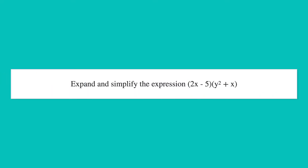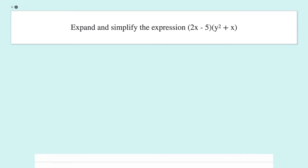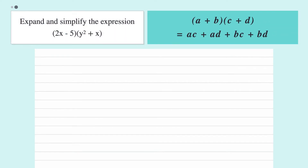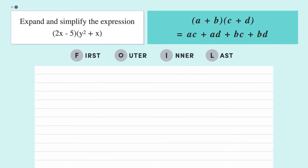Expand and simplify the expression (2x − 5)(y² + x). This expression is in the form (a + b)(c + d), so let's bring up the product rule. We know that this expression will simplify to ac + ad + bc + bd, where a, b, c and d are the terms in the given expression. We could identify what each variable is and then substitute it into this expression, but personally I find that using the FOIL method is easier because you don't have to remember where each of the variables go.